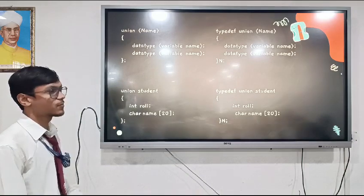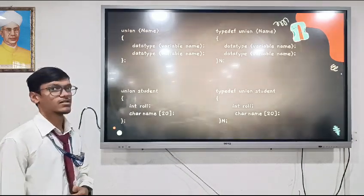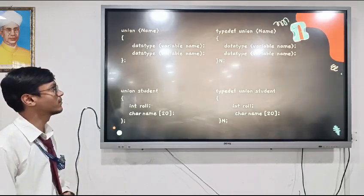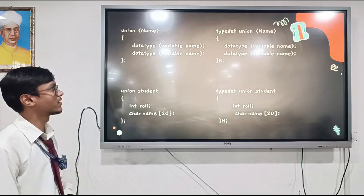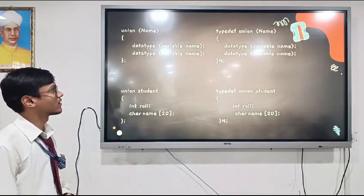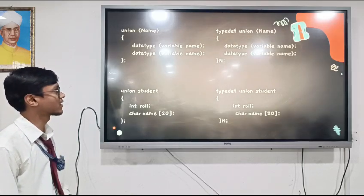In C programming, typedef provides the facility to create an alias for the user-defined data type. When we write typedef, after writing typedef, we have to use the keyword union and the name of the data type.